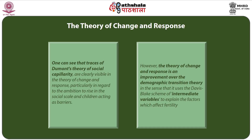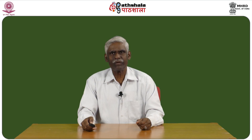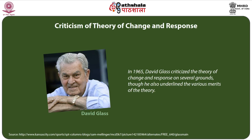The theory of change and response is an improvement over the demographic transition theory in the sense that it used the Davis-Blake scheme of intermediate variables to explain the factors which affect fertility. There are several criticisms of Kingsley Davis's theory of change and response. In 1965, David Glass criticized the theory on several grounds, though he also underlined the various merits of the theory.